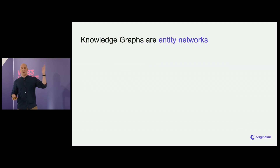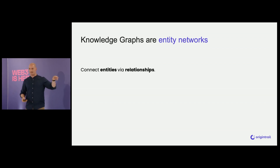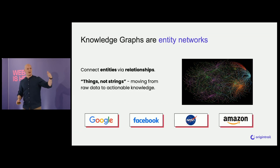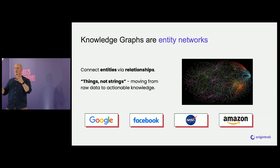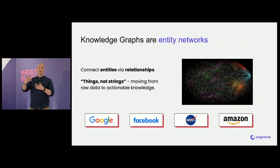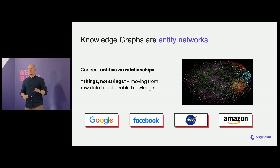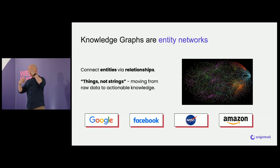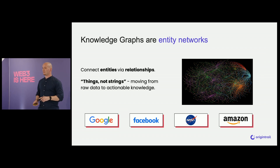What are great databases are knowledge graphs — they're actually even better than databases. They're something called entity networks or semantic networks that connect entities via relationships. Google created this term 'knowledge graph' and described it simply as 'things, not strings.' Strings are raw character data, but things are actionable knowledge objects connected to each other. Every major Web2 company has them under the hood. Netflix recommends you a movie from a knowledge graph. Google search comes from a knowledge graph. Amazon recommends purchases based on your history and others' — all connected in the knowledge graph. Even NASA uses knowledge graphs for research.